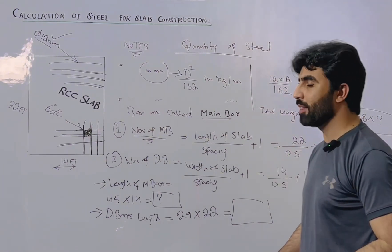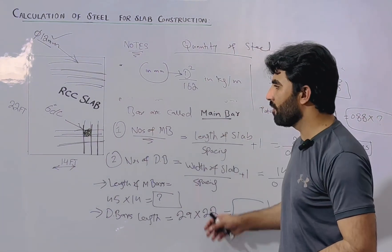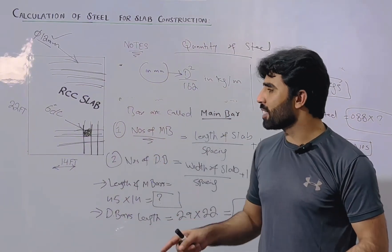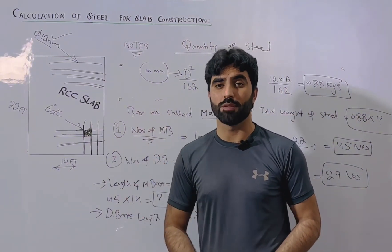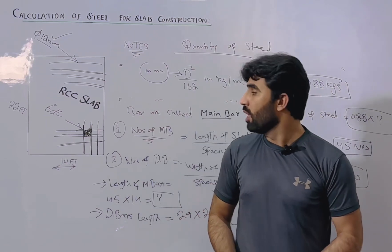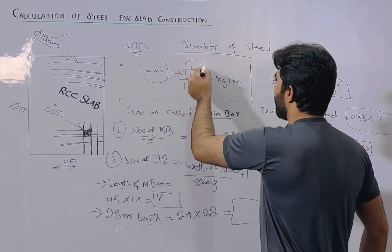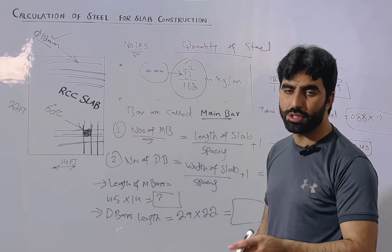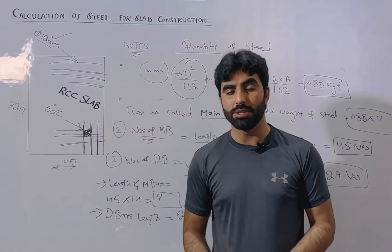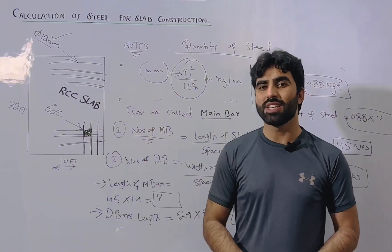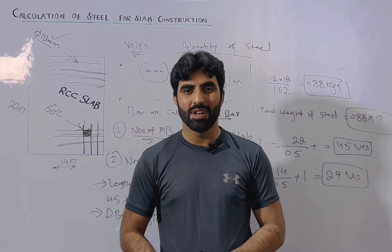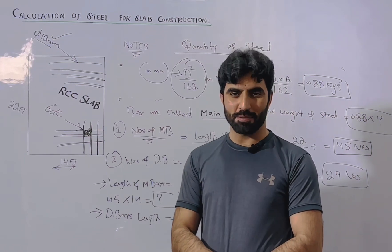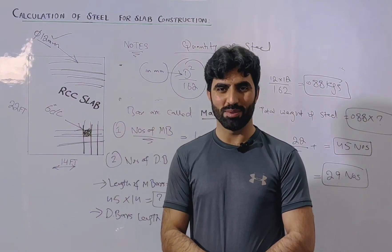I am guiding you on the method so you can calculate for any slab size — for example, 60 feet by 28 feet. You can use the same formula for any slab dimensions. By this formula, you can find the unit weight for any steel diameter: 16 mm, 12 mm, 25 mm, 10 mm, etc. This is a short practical video guiding you on slab reinforcement details. Thanks for watching. See you in the next video. Goodbye.